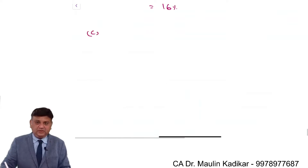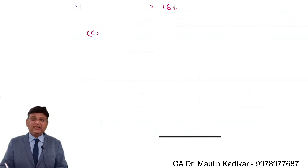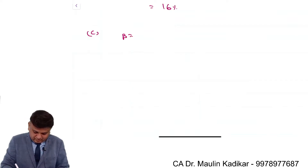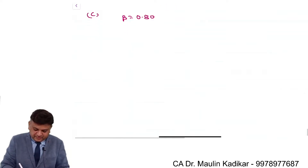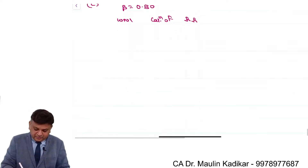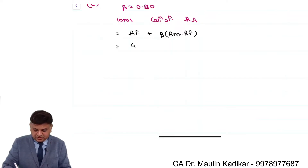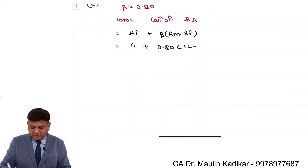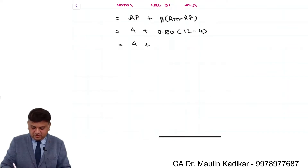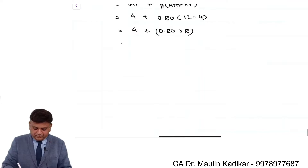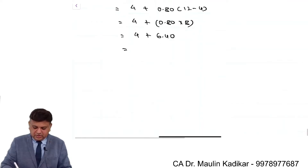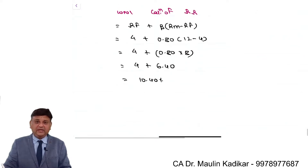In part C, beta is 0.8. Working note 1 — calculation of required rate of return: RF plus beta into (RM minus RF). Risk-free rate is 4%, beta is 0.8, return on market portfolio is 12%, risk-free rate is 4%. So it is 4 plus 0.8 into 8, which gives 4 plus 6.4, so the required rate of return is 10.4%.